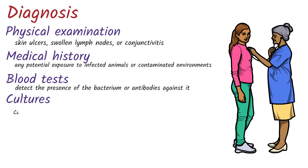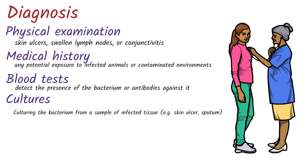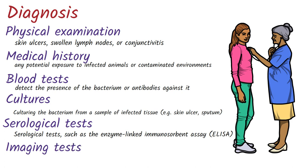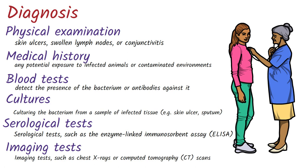Cultures: Culturing the bacterium from a sample of infected tissue can confirm the diagnosis of Tularemia. Serological tests such as enzyme-linked immunosorbent assay, also called ELISA, can detect antibodies against the bacterium in the patient's blood. Imaging tests such as X-rays or CT scans can be used to look for signs of infection in the lungs or other organs.